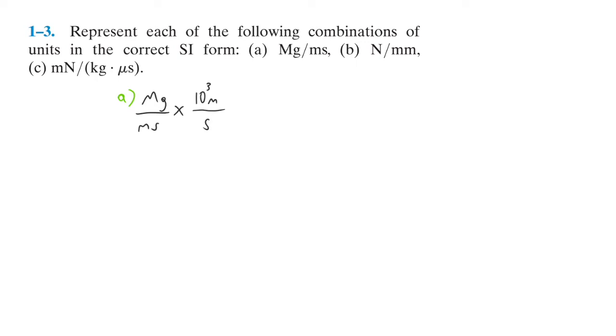So those cancel. Megagram times ten to the third equals ten to the ninth grams over second, which is the same thing as gigagram per second. So that's the first one.